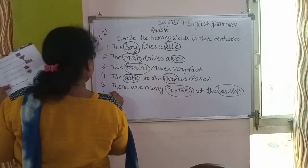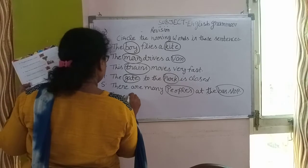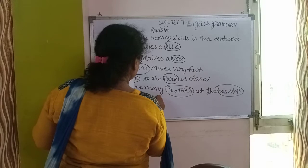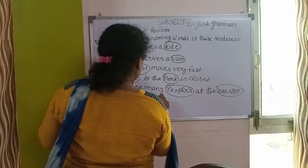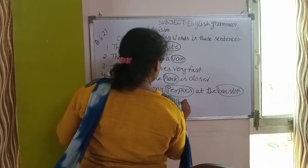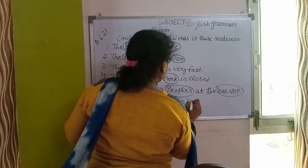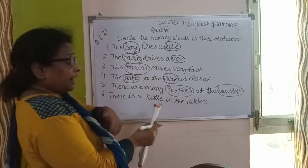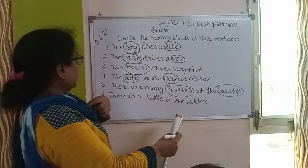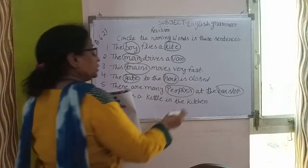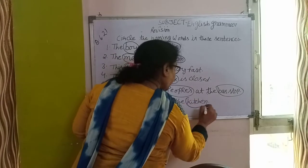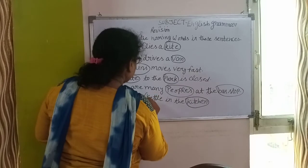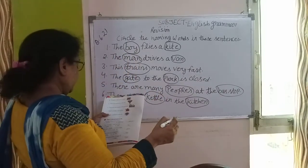There is a kettle in the kitchen. जो kettle है, वो कहां है? Kitchen में है. तो kitchen एक place है — यह naming word है, and kettle एक वस्तू है. यह भी naming word है.